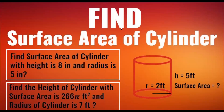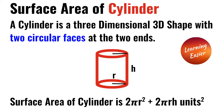Welcome to Learning User. Today we are going to find the surface area of a cylinder. A cylinder is a three-dimensional or 3D shape with two circular faces at the two ends. The surface area of a cylinder is 2πr² + 2πrh, where r is the radius and h is the height.